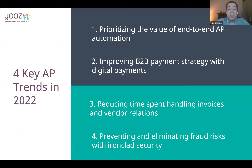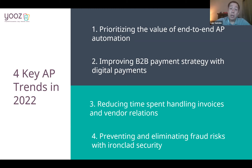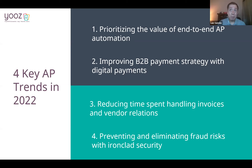Four key AP trends to look for in 2022, quoting Arden Partners. The first is prioritizing the value of end-to-end AP automation. According to Arden Partners, 70% of MMEs have prioritized AP automation for 2022 — a significant change compared to last year when only 48% said the same in 2021. We want to make sure we take advantage of that.